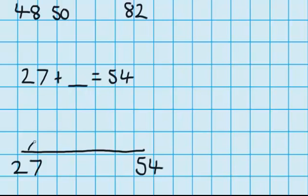Just like with the other ones, from 27 I'm going to jump up to the closest tidy number, which in this case is 30. So that was a jump of 3. Now from 30, again, it's really easy for me to jump from there up to 54. 30 plus what equals 54? The answer is 24.